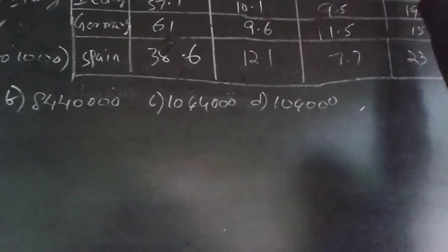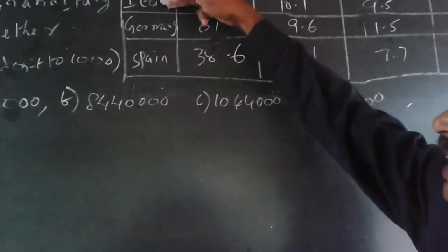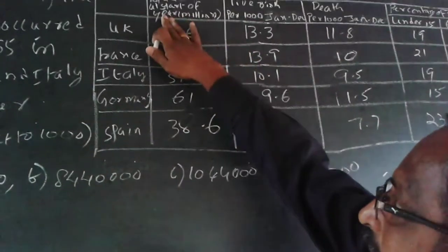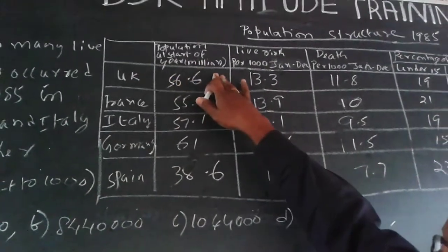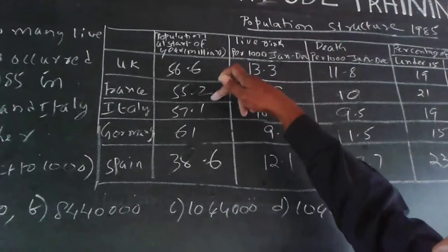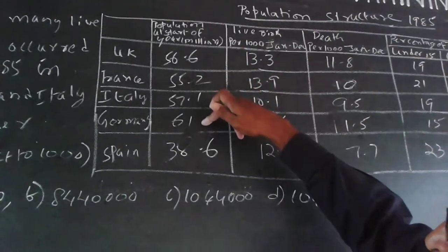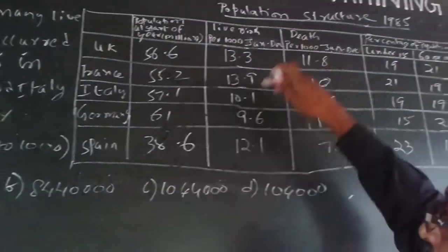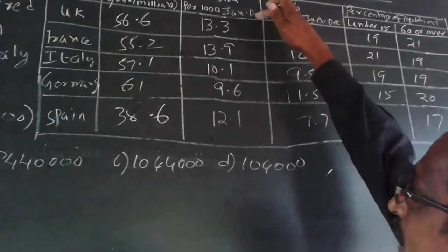Population structure in 1985. The five countries are UK, France, Italy, Germany, and Spain. Population at start of the year in millions: 56.6, 55.2, 57.1, 61, and 38.6 million.